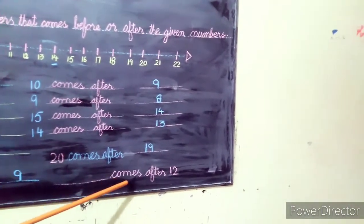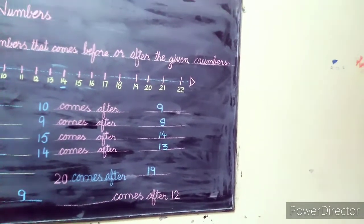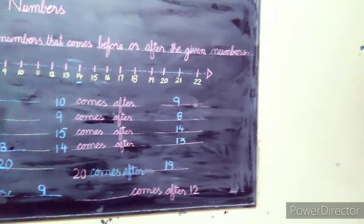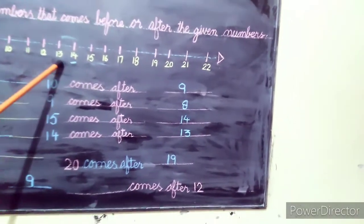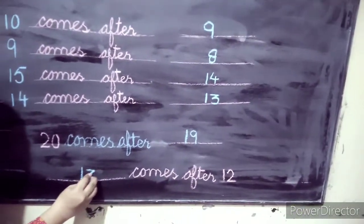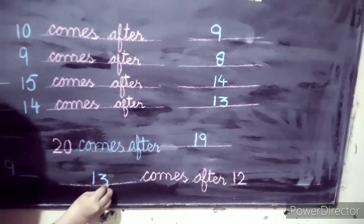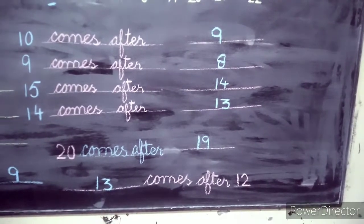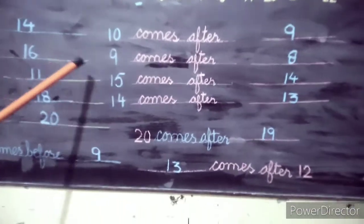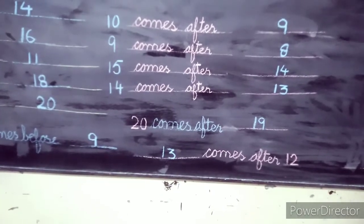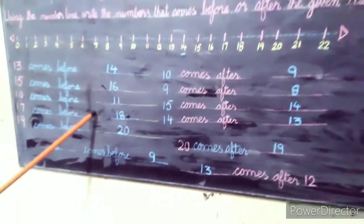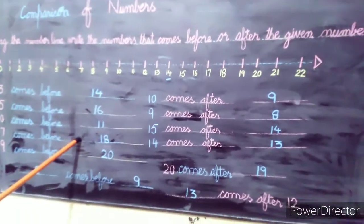Dash comes after 12. From the number line, after 12 we have 13. So 13 comes after 12. Friends, whether it is 'after' or 'before', use the number line to find the answer.